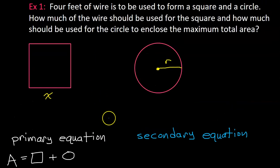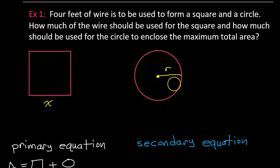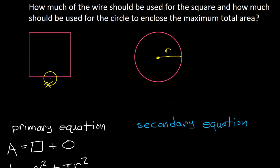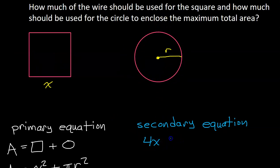For the secondary equation, what else do we know that we haven't used yet? Well, the very first word of this problem: 4 feet. Four feet of wire is to be used, so the total perimeter of the square and circumference of the circle added together has to add up to 4. The perimeter of the square is 4x, and the circumference of the circle is 2πr, so those two boundaries should equal 4.